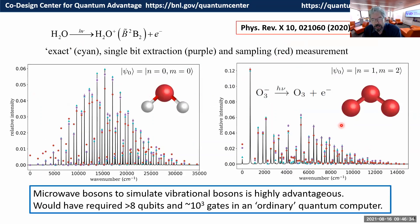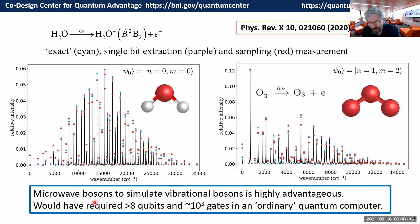For ozone going to the ozone ion starting from a non-Gaussian Fock-state initial condition — using microwave bosons to simulate vibrational bosons is highly advantageous. It would have required eight qubits just to hold the photon number and more than 1,000 very complicated multi-qubit gates to program this simulation on an ordinary quantum computer. No existing computer today can achieve high fidelity at circuit depths of 1,000. Using bosons when simulating physical models that contain bosons can be highly advantageous.